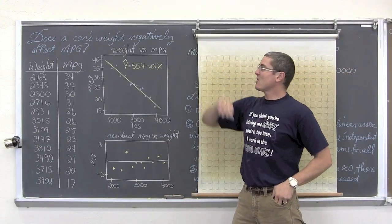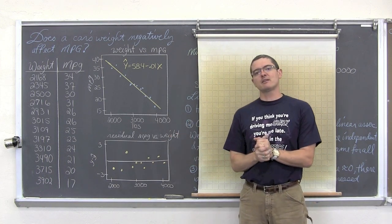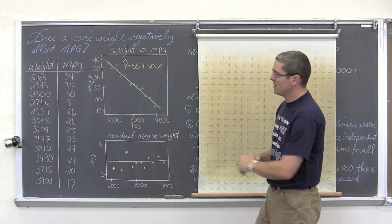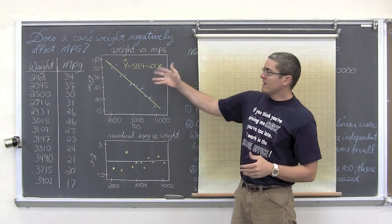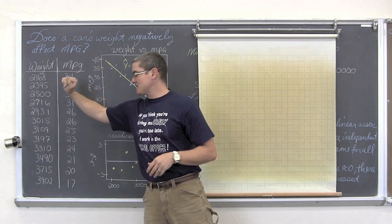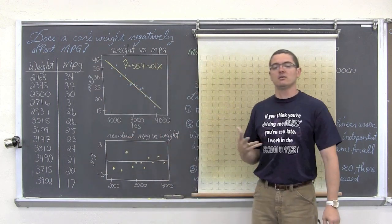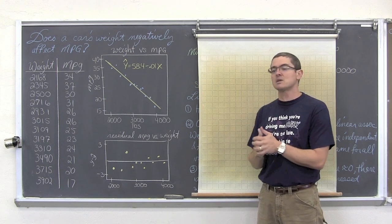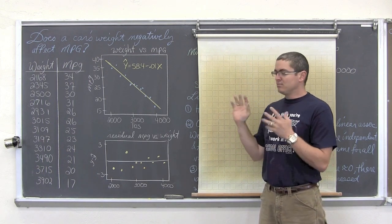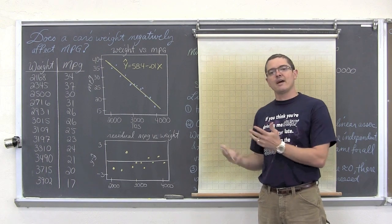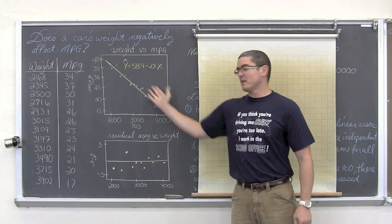Here is our example: does a car's weight negatively affect miles per gallon? The numbers were made up for the video, but it is a true statement. We have 12 weights ranging from 2168 to 3902 pounds, with miles per gallon going from 34 down to 17. It clearly seems like the heavier the car, the less efficient it is going to be. Even though this looks obvious, we need to run it through a statistical analysis. The raw data is displayed in a properly labeled scatter plot with scales and labels on the explanatory and response variables.